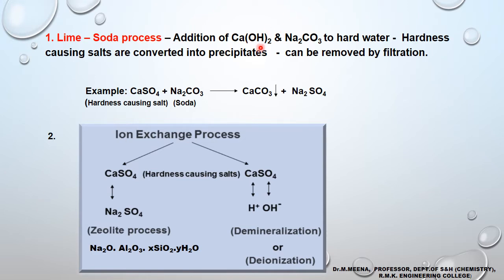In the lime-soda process, we add calcium hydroxide and sodium carbonate to the water sample so that all the hardness-causing salts are converted into precipitates, which can then be removed by filtration. For example, if calcium sulfate is present, sodium carbonate is added; calcium sulfate and sodium carbonate react to form calcium carbonate (a precipitate) and sodium sulfate. However, unless the mixture is stirred effectively, we cannot remove all the hardness-causing salts.